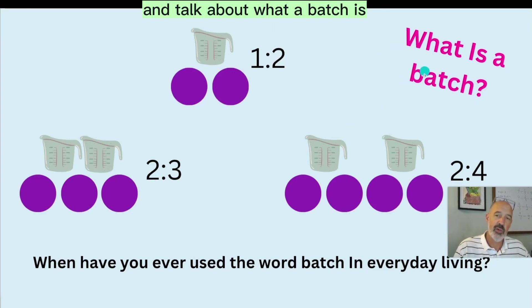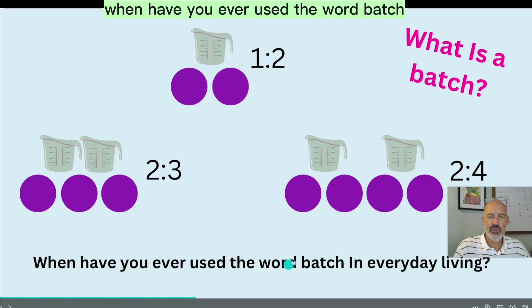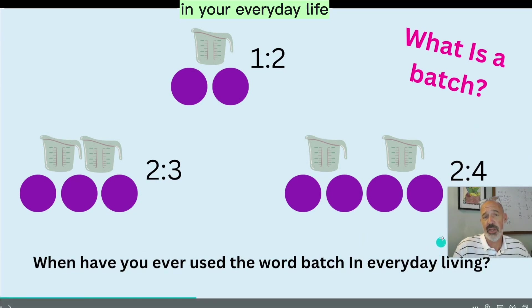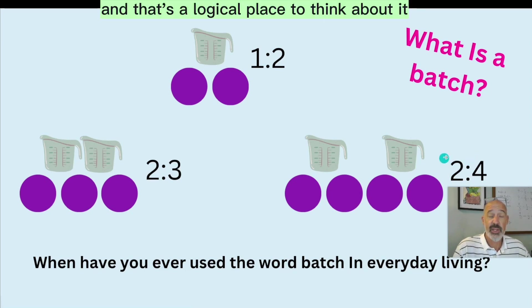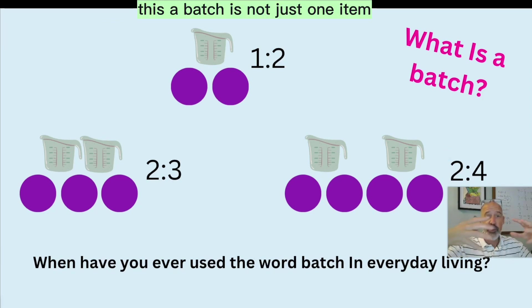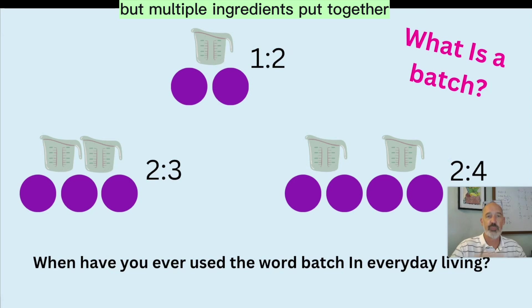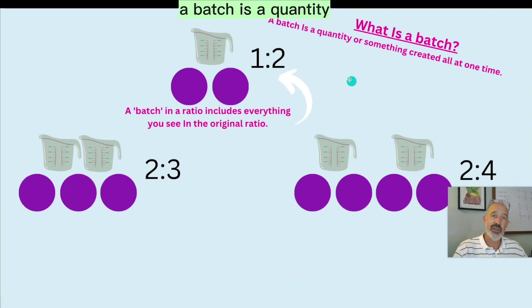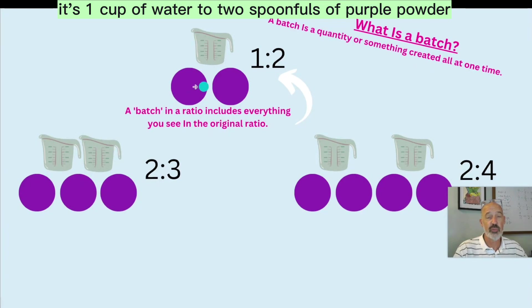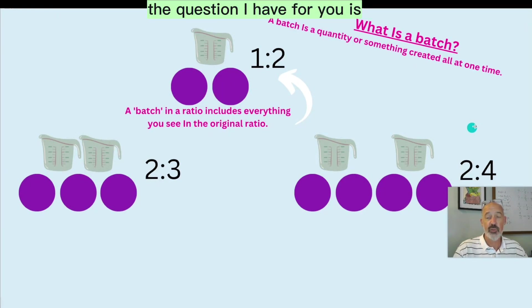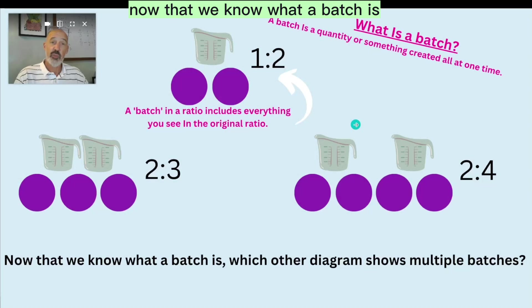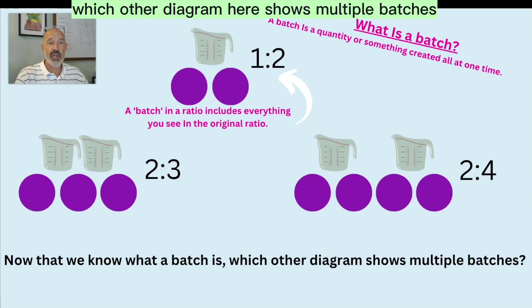When have you ever used the word batch in everyday living, in your everyday life? I'm assuming it's with cooking. And that's a logical place to think about it, because when you cook, you put different things together. A batch is not just one item, but multiple ingredients put together. It's the same here. A batch is a quantity or something created all at one time. So this is our original batch. It's one cup of water to two spoonfuls of purple powder. The question I have for you is, now that we know what a batch is, which other diagram here shows multiple batches? Is it the two to three ratio or the two to four ratio? Or is it both? Are they both showing multiple batches?